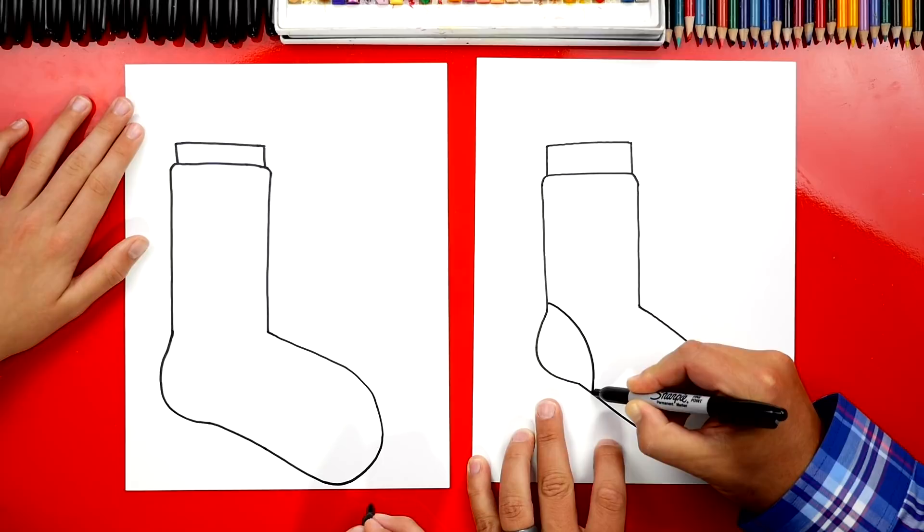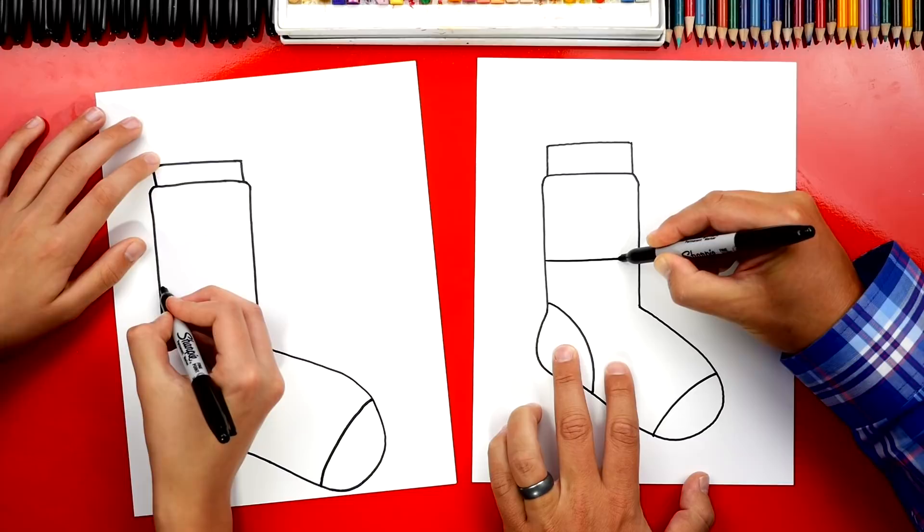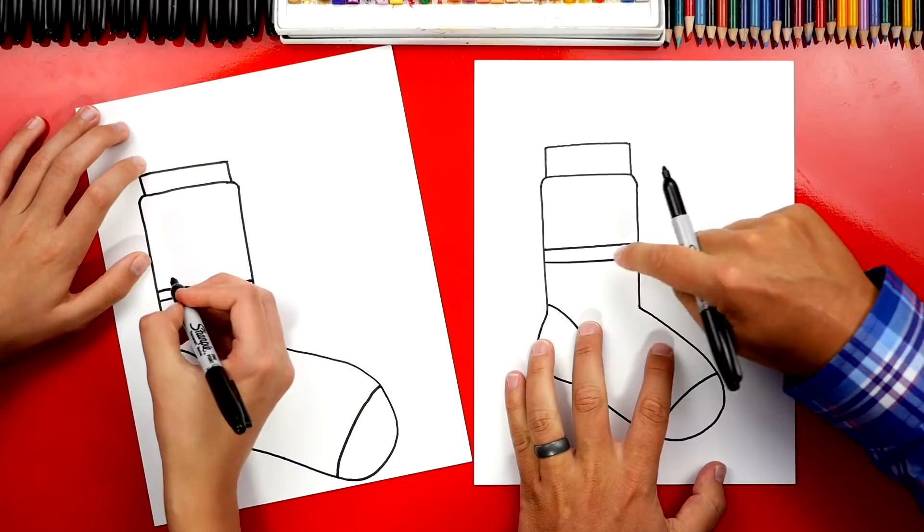Then let's add some stripes. Now you guys don't have to follow along and draw the same designs that we're drawing on our socks. You guys could use your own creativity and add your own designs. Let's add a few more stripes. So there's one stripe. I'm gonna add two more lines for another stripe and two more lines for a third stripe up here at the top.